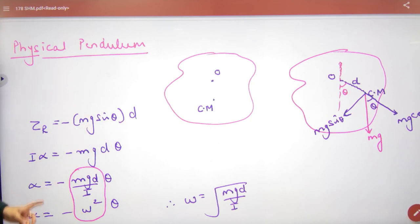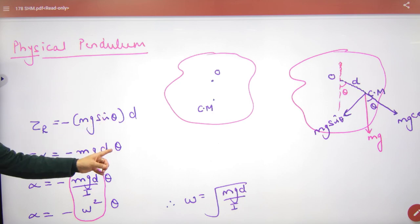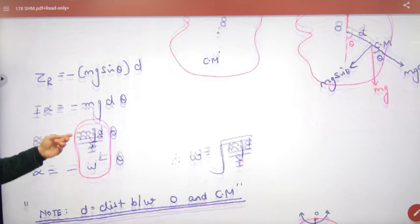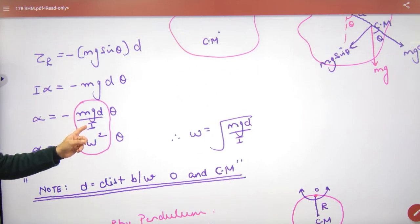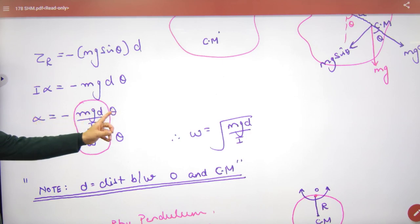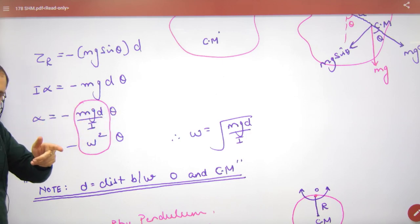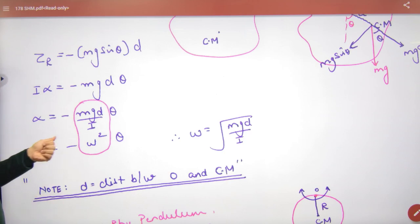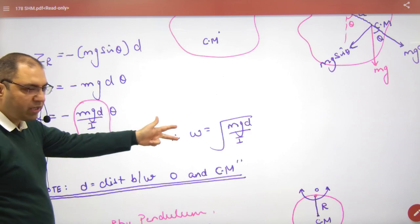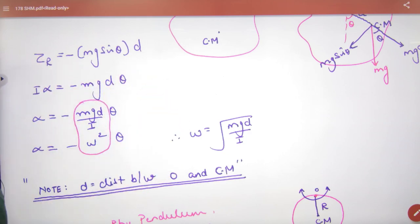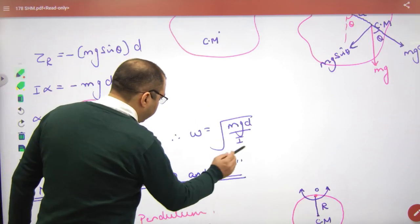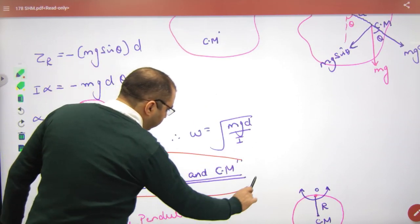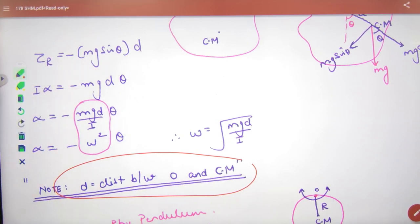Torque, what happens? I times alpha. And angle sin theta small is then theta. So here I alpha is proportional to theta with negative sign. These are all constraints, so this is angular SHM, angular SHM equation. Compare what happened? Omega value formula: omega is equal to mgd by I, where d means distance between axis and center of mass.